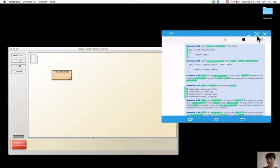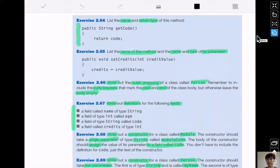Let's do exercises that will make us more used to the terminology of the new concepts that were introduced. For the first exercise, the name of the method is getCode, and the return type is String.